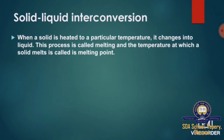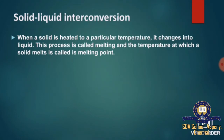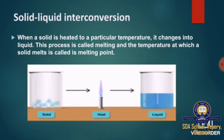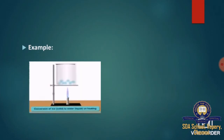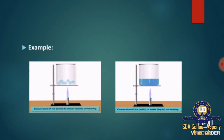When a solid is heated to a particular temperature, it changes into liquid. This process is called melting, and the temperature at which a solid melts is called the melting point. This conversion is called solid-liquid interconversion, and this process is also called melting. For example, the conversion of ice (solid) to water (liquid) on heating.